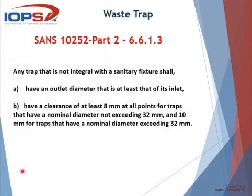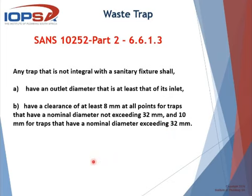Looking at waste traps: SANS 10252 Part 2, sub-clause 6.6.1.3 is very clear. It states that any trap not integral with the sanitary fixture shall have an outlet diameter at least equal to its inlet. More importantly, it shall have a clearance of at least 8 millimeters at all points for traps with a nominal diameter not exceeding 32 millimeters, and 10 millimeters for traps with a nominal diameter exceeding 32 millimeters — that is, 40mm and above.